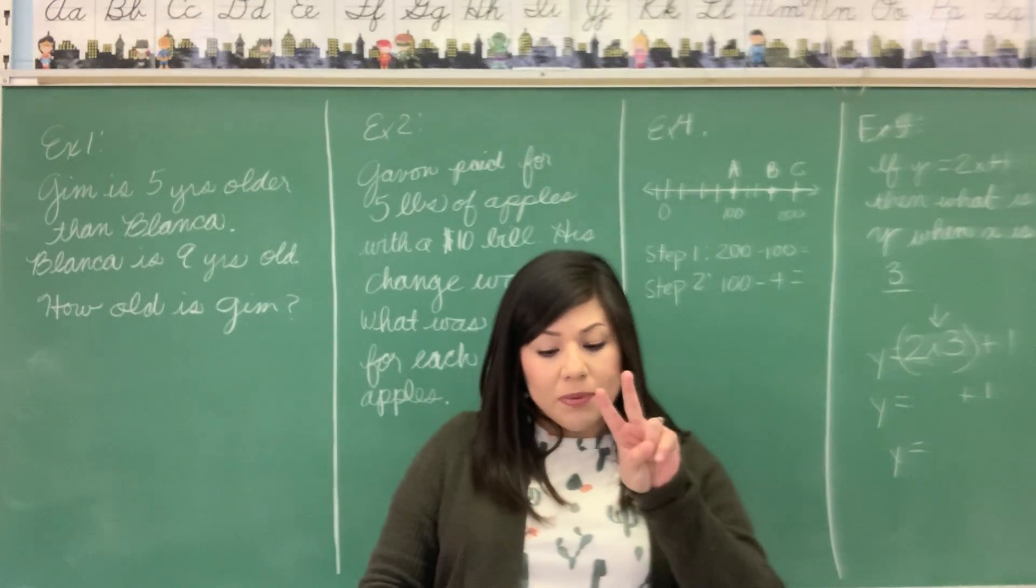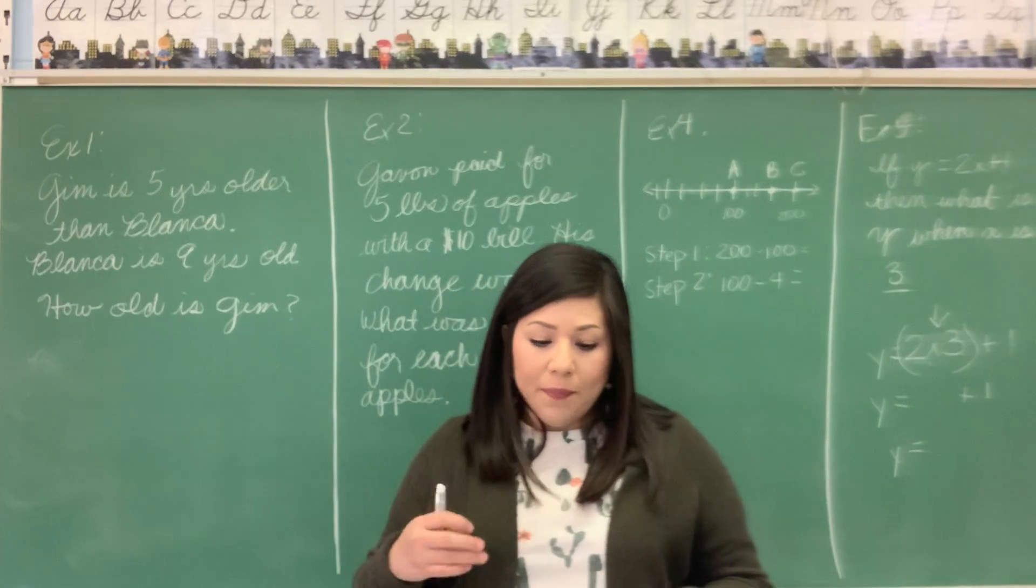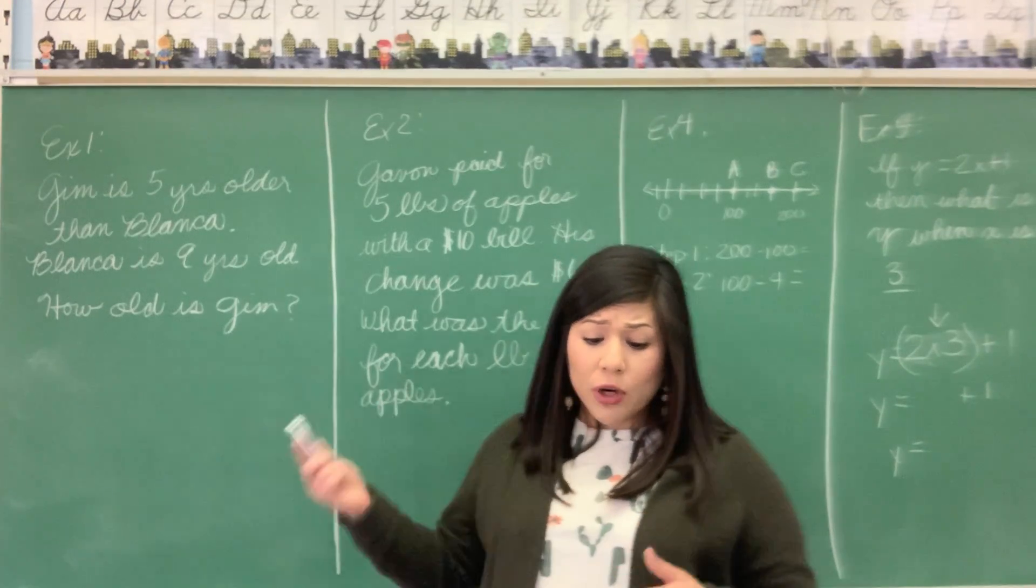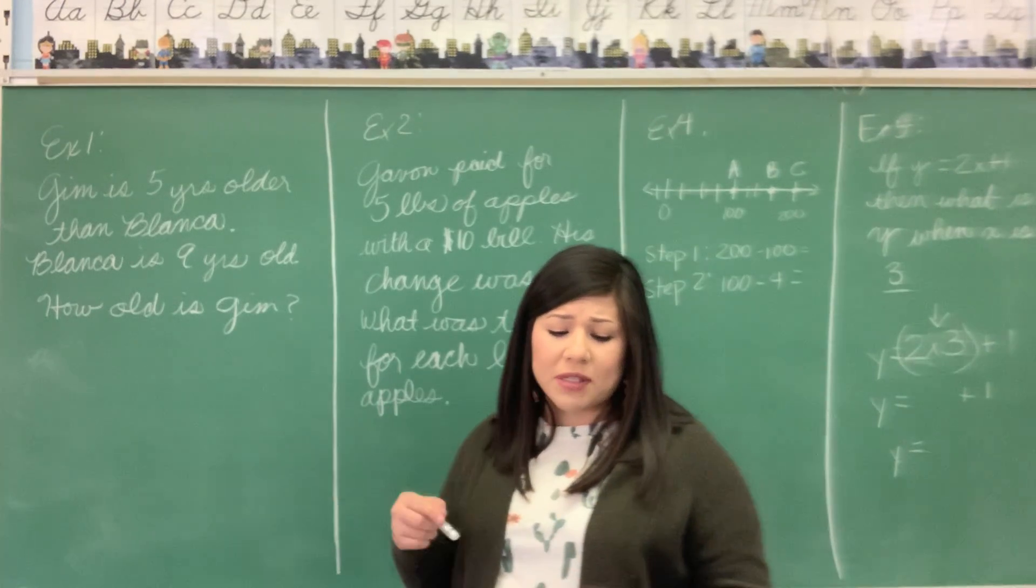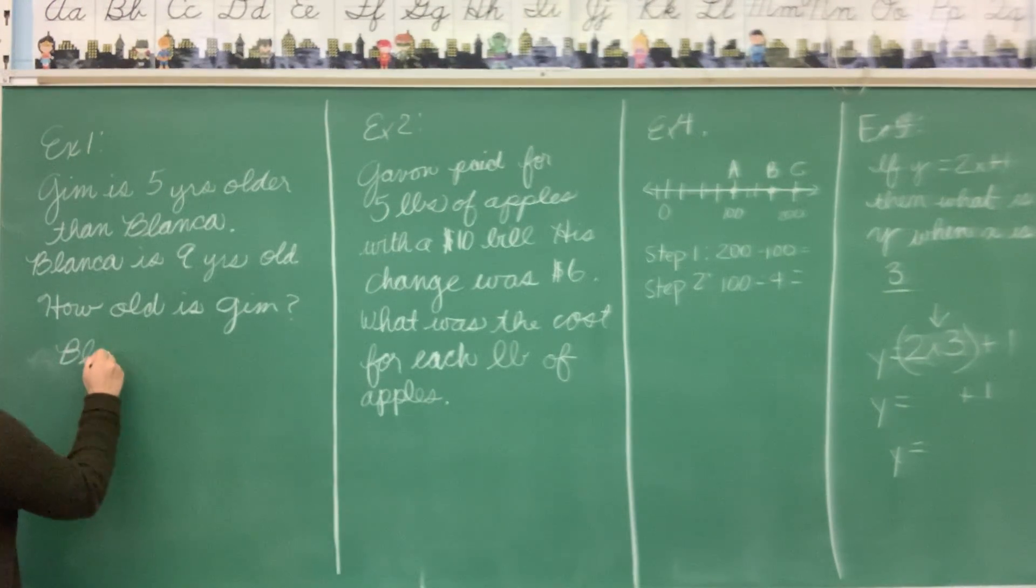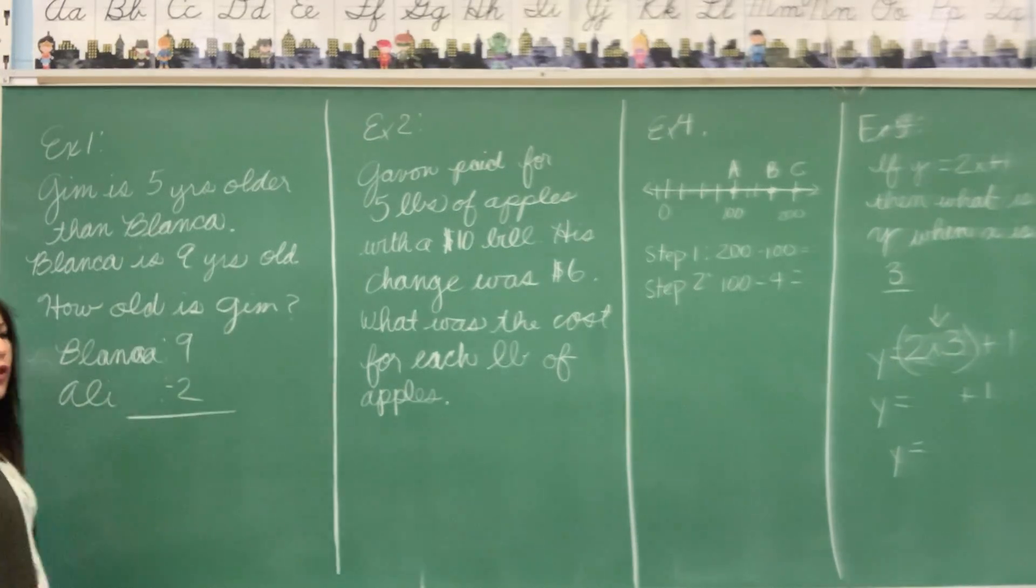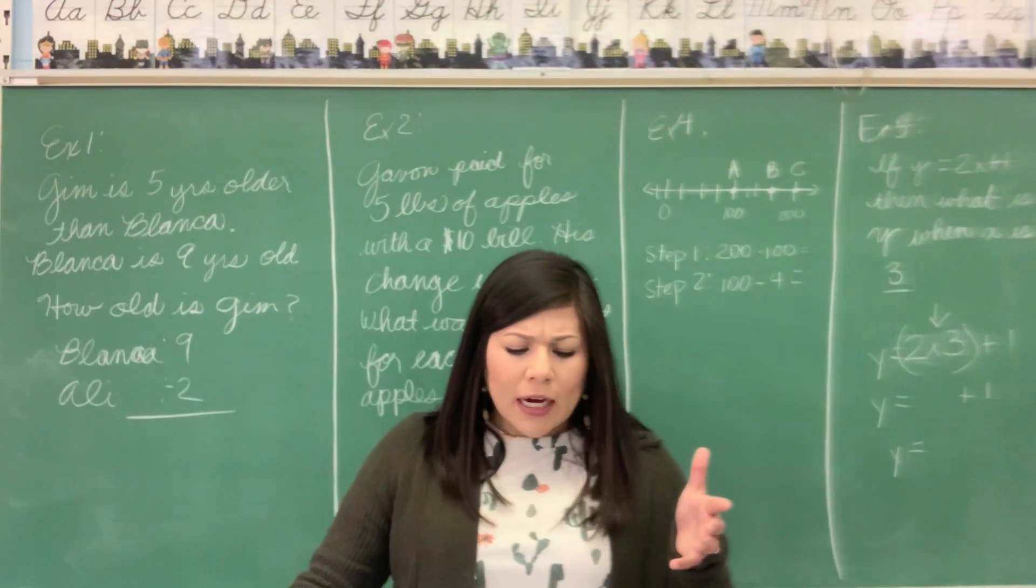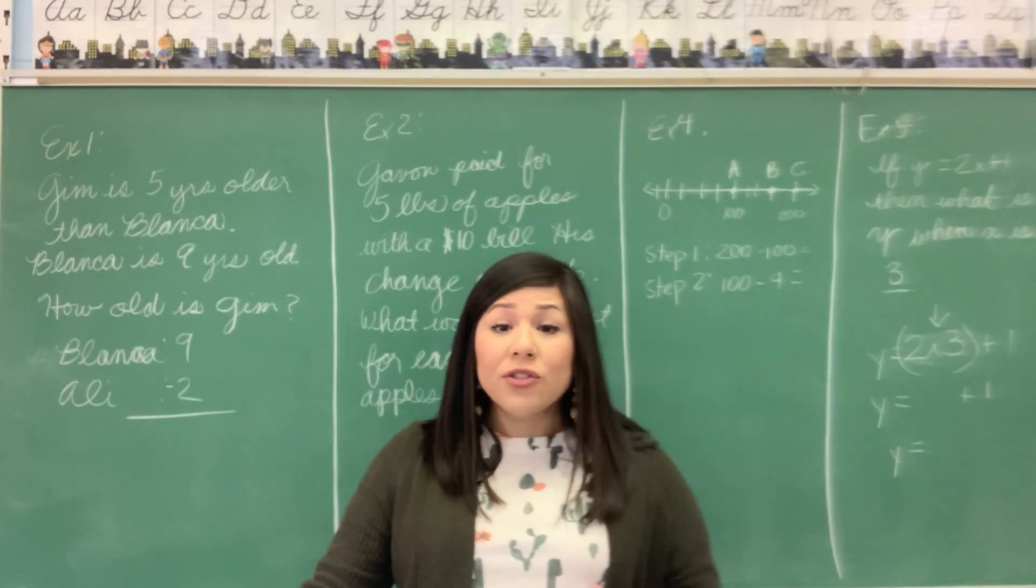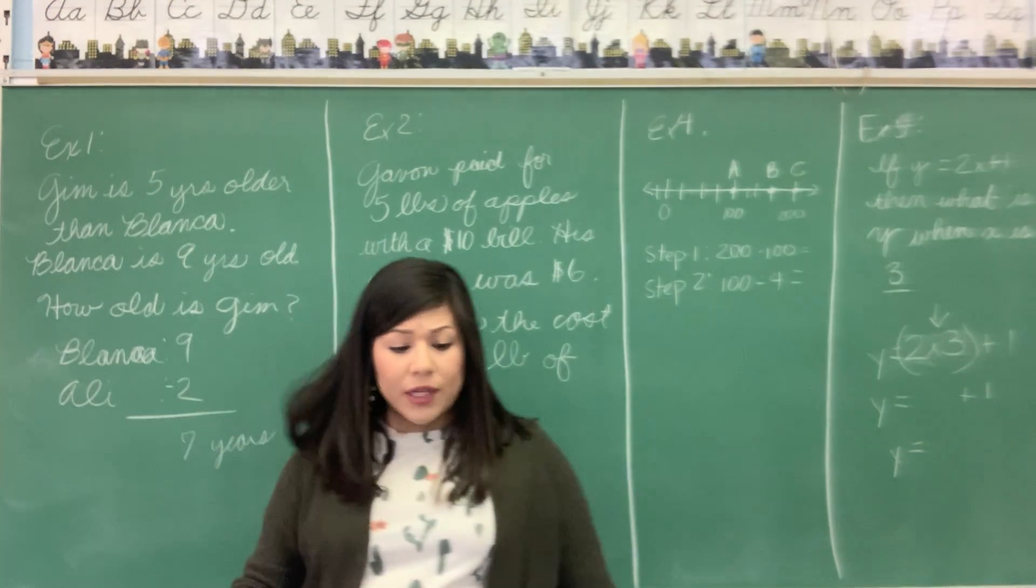So we're going to use two steps to solve this problem. First, we're going to use Blanca's age to find Allie's age. Then we're going to use Allie's age to calculate Jim's age. So we know that Blanca is nine years old, right? And Allie is two years younger. So we need to solve this. We're going to subtract first. Nine minus two is seven. So we know that Blanca is seven years older than Allie.